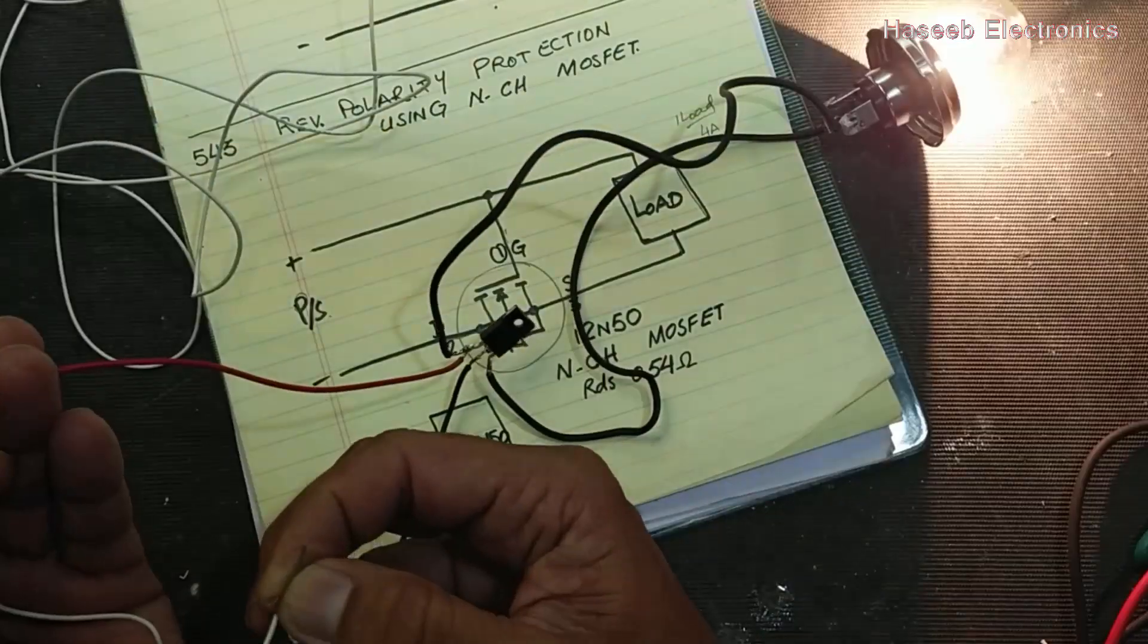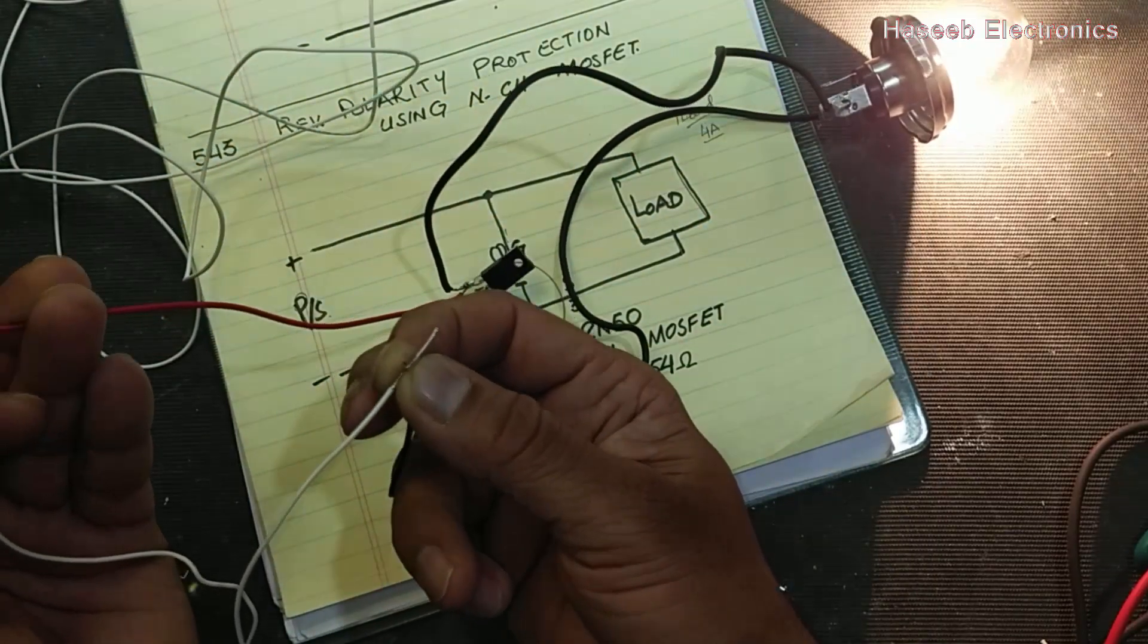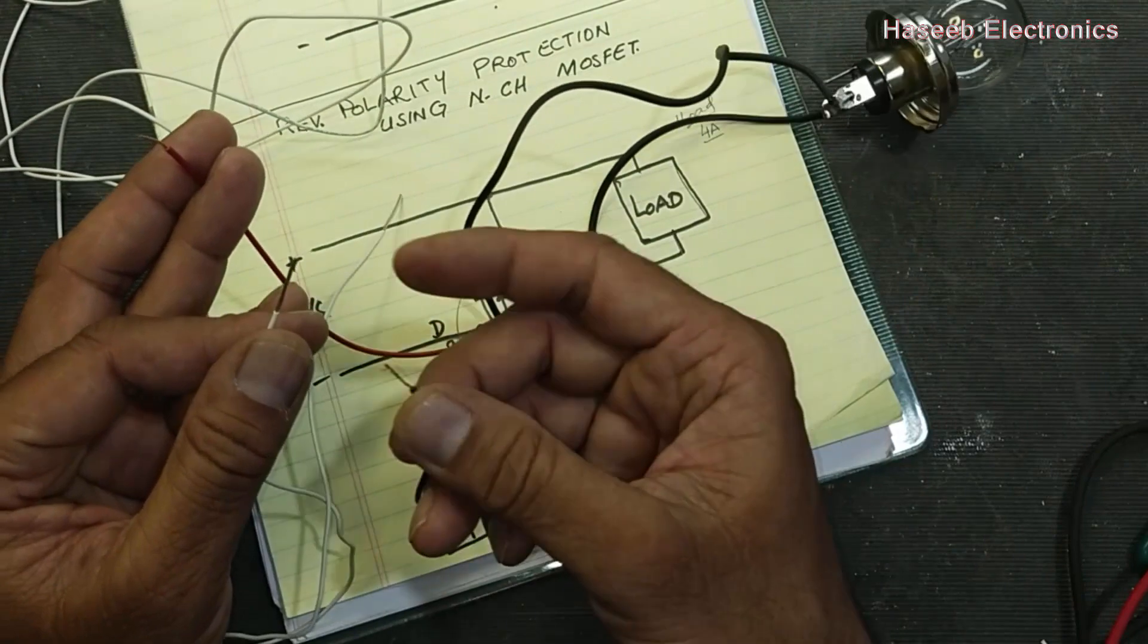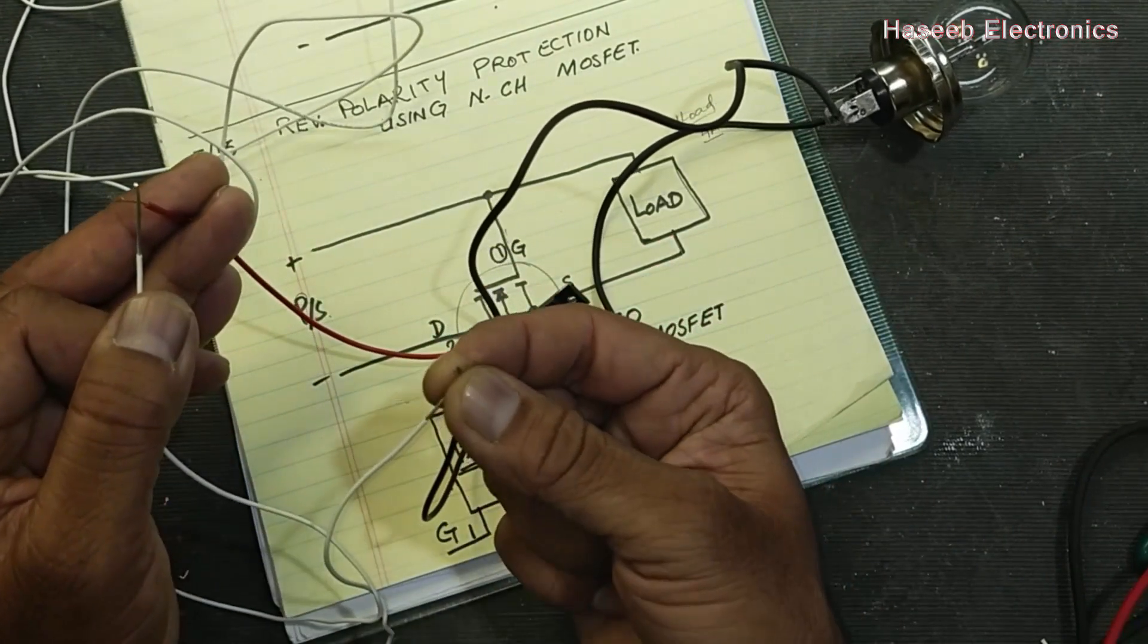I want to connect it, so it is illuminating. When I reverse the polarity, this line here and this line here, it is off.